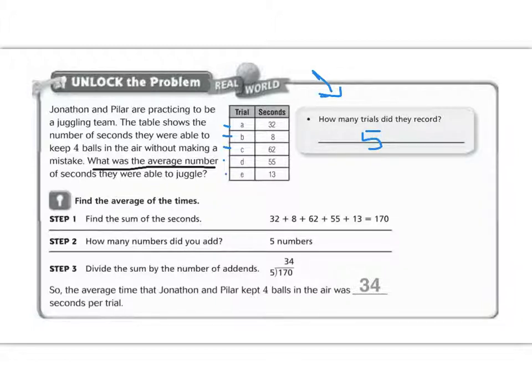Step 1 says that we are going to find the sum of all of the data. They gave it to us, but let's go ahead and add them. 32 plus 8 plus 62 plus 55 plus 13. Pause for a moment and add all these together. Great job. You should get 170.